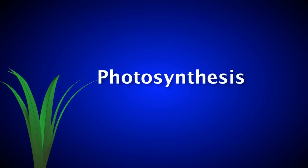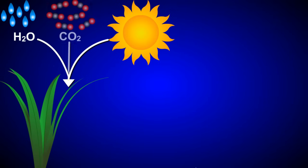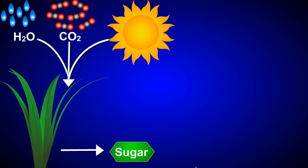The leaves of this plant have cells that carry out photosynthesis. During photosynthesis, plants capture the energy from sunlight and use it along with water and carbon dioxide to produce carbohydrates or sugars. Oxygen is also released as a byproduct.